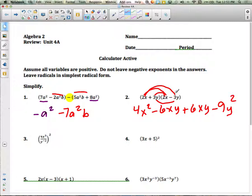If you look in the middle, you have like terms, and they're opposites. So they will cancel. Negative 6 plus 6 is 0. And then you're left with 4x squared minus 9y squared.